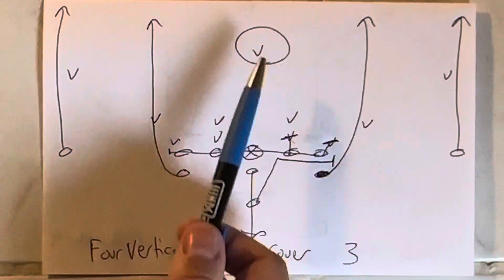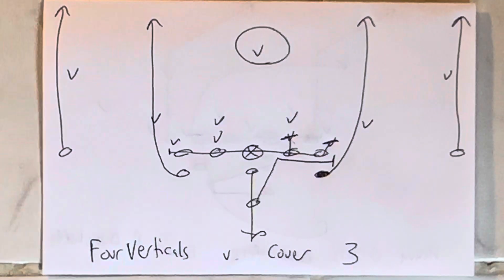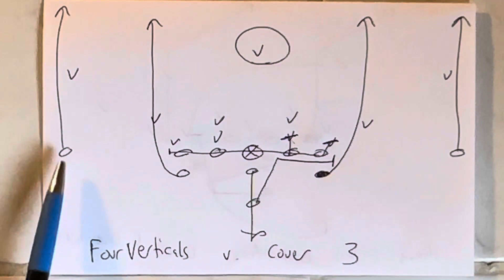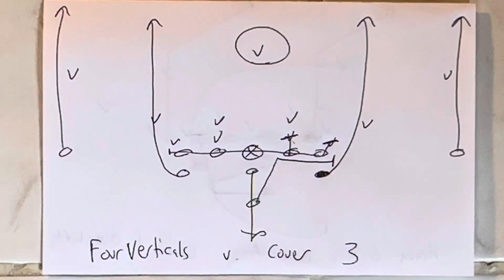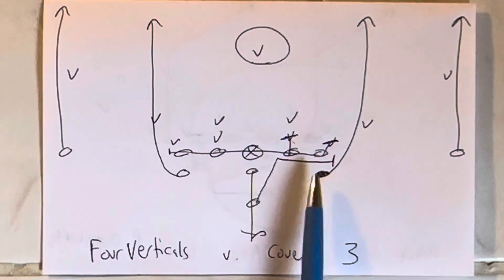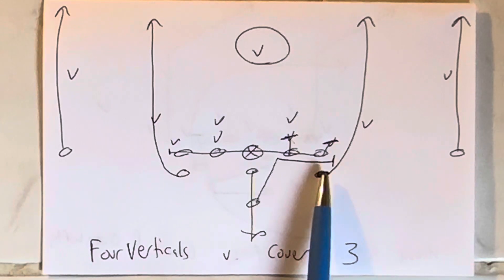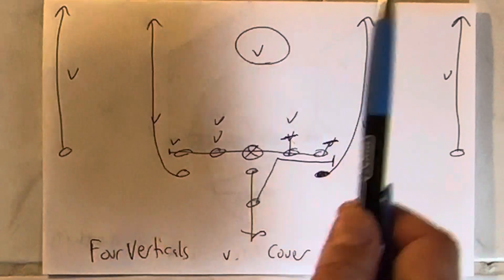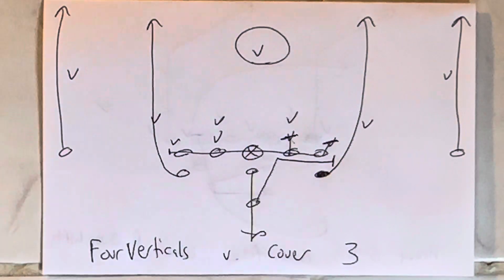So against cover three, you have a single high safety. The goal was to fast break that safety. The receivers would get up the field like a bat out of heck and run verticals. The A-backs would simply step with a play side foot at the snap and run up the hashes. The quarterback would five-step drop.